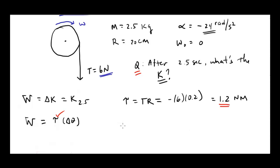I can plug this in for torque, but now I have to find delta theta. I'm going to use a kinematic equation. Delta theta equals omega initial T plus 1/2 alpha T squared. Omega initial is 0, so this whole term goes away. I'm left with 1/2 negative 24 times 2.5 squared. This gives me negative 75 radians. Now I can plug this in for delta theta.